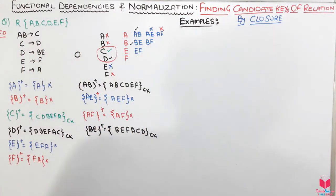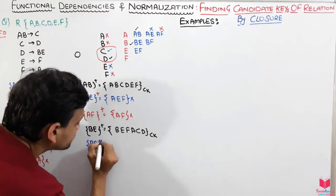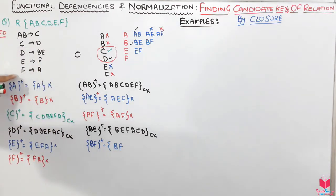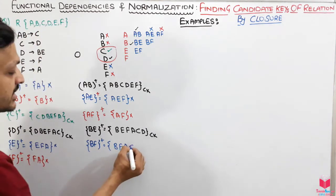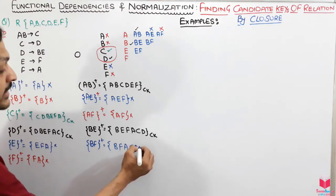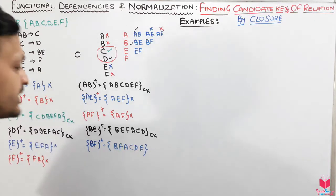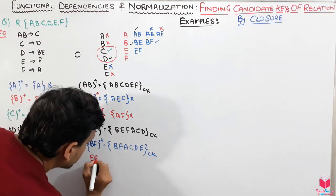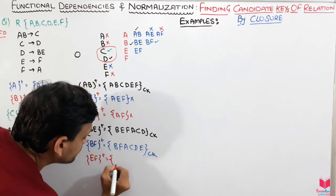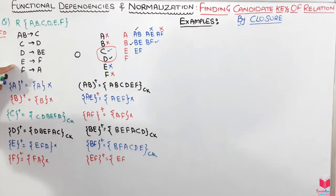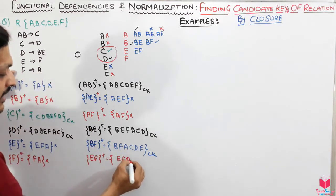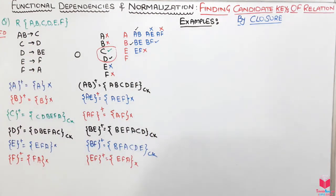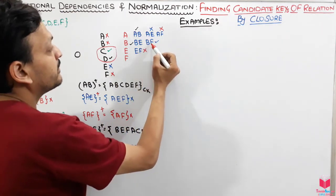Now check BF: (BF)+ gives {B, F}, F→A gives A, AB→C gives C, C→D gives D, D→BE gives E — all attributes are present, so BF is a candidate key. Check EF: (EF)+ gives {E, F}, E→F (already there), F→A gives A, but from A alone nothing further — not all attributes, so EF is not a candidate key.